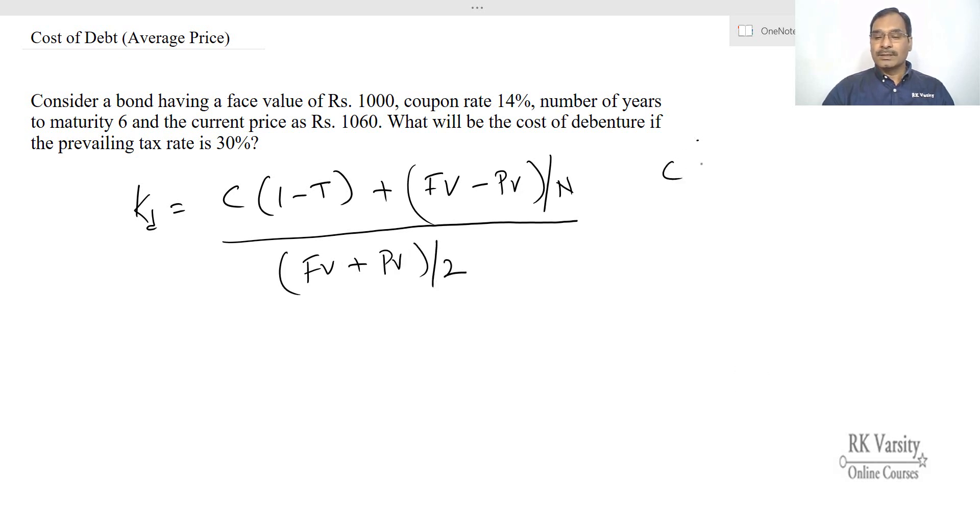Here, C is coupon amount, T is applicable tax rate, FV is face value or par value, and PV is present value or current market price.